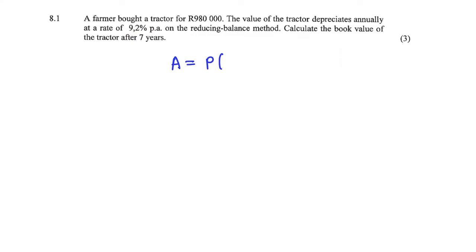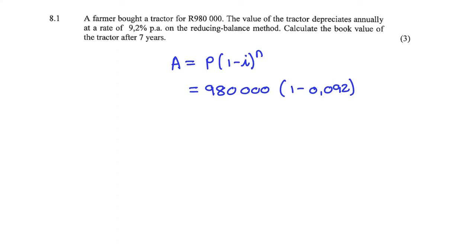we have A equals P times (1 minus i) to the power of n. The P value is 980,000 Rand. The i value is 0.092 and n is 7 years. Remember for i, we take 9.2% which is 9.2 over 100, and if we simplify that, that is 0.092.